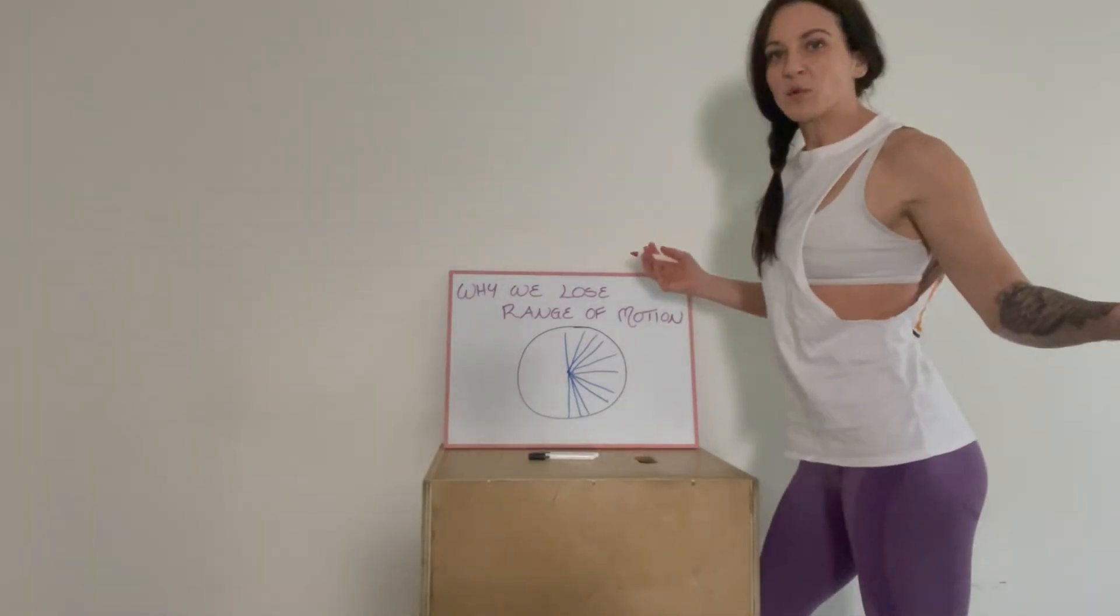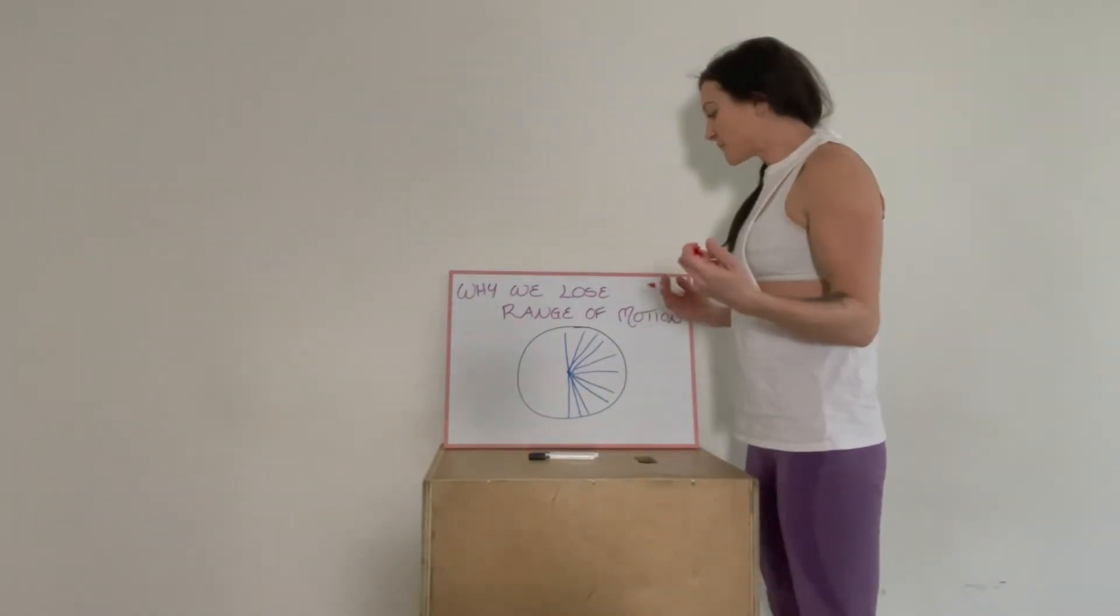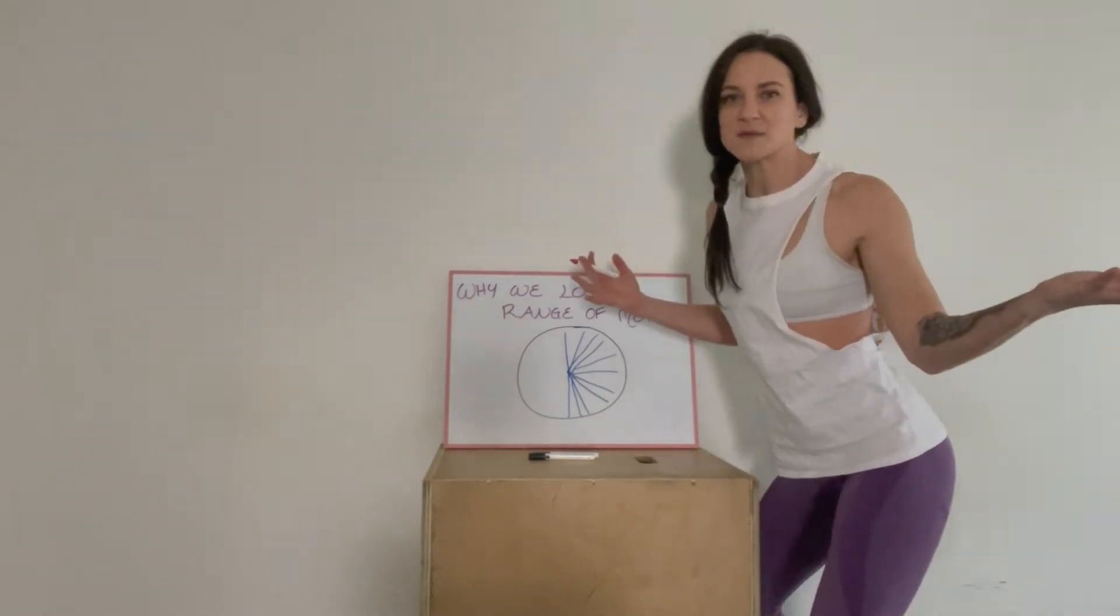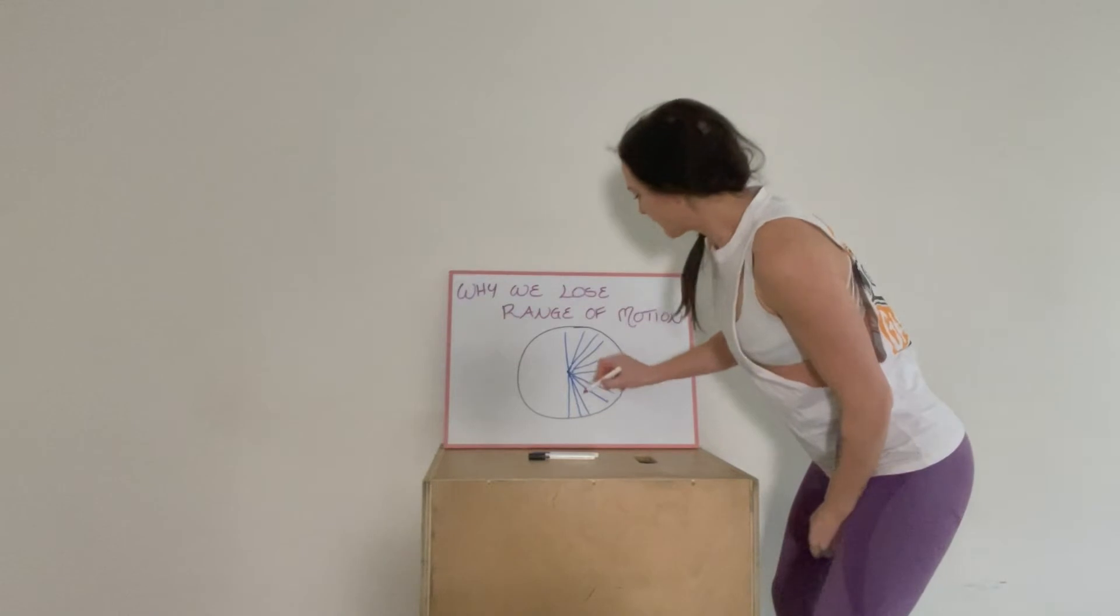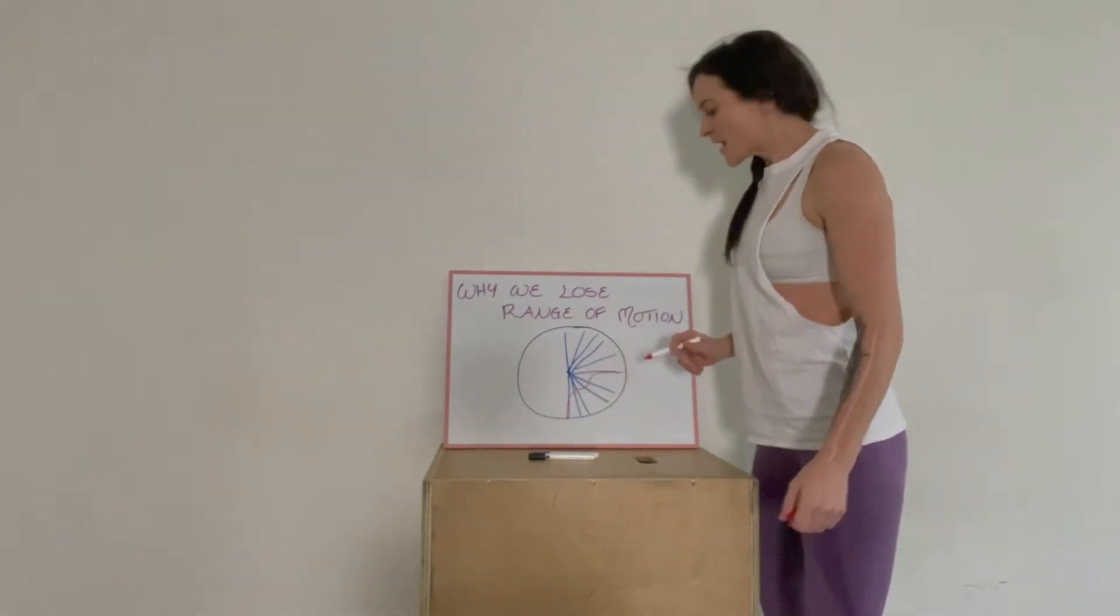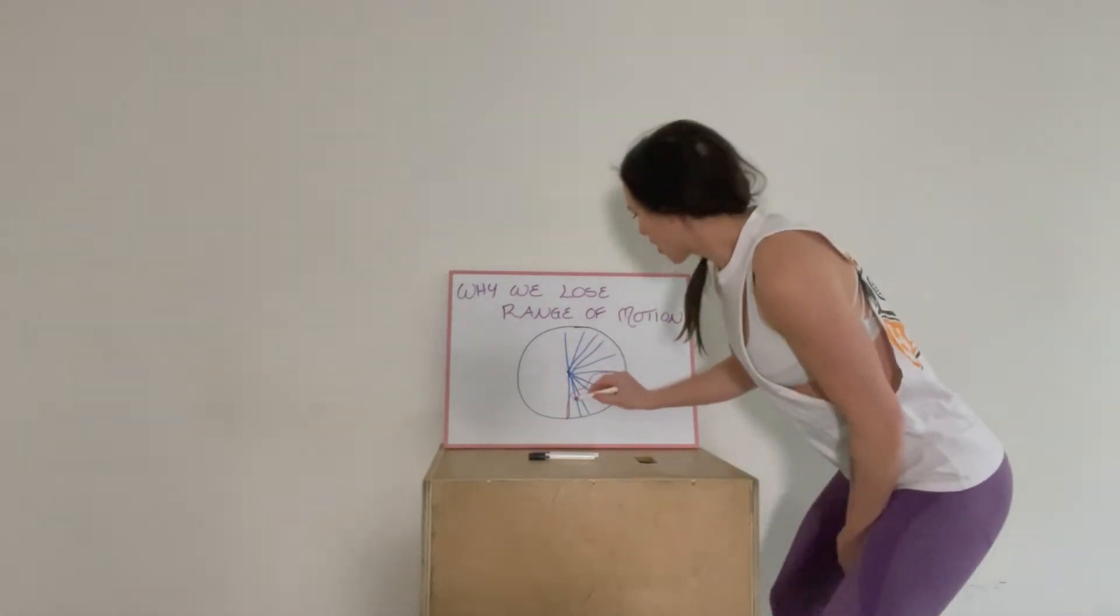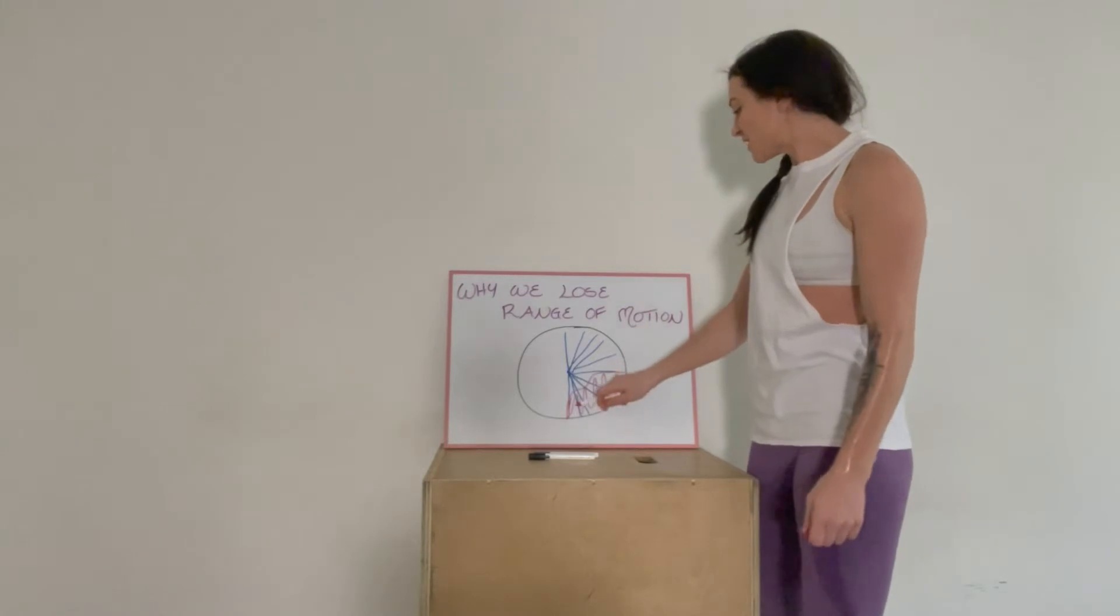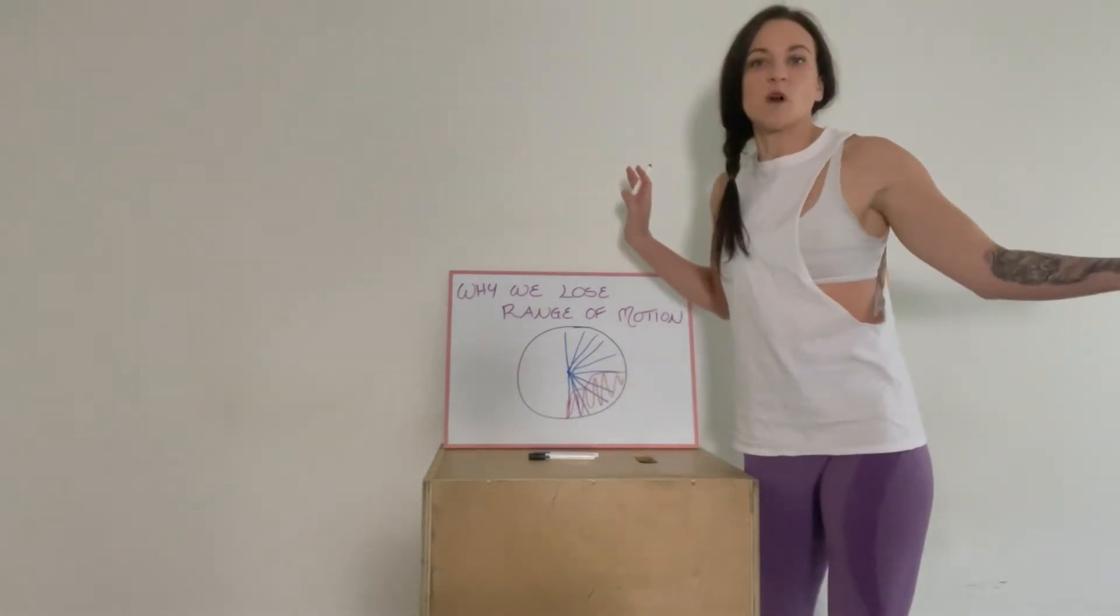So why is this important? Say that I'm somebody that just doesn't go into this range. I've had no reason to go into my internal rotation. So now I have this big chunk of tissues that I just never touch, all of this stuff in here. I just never go into that range. So this tissue just never gets worked.